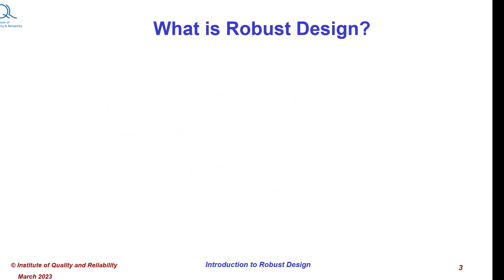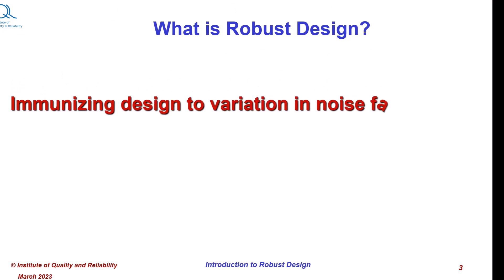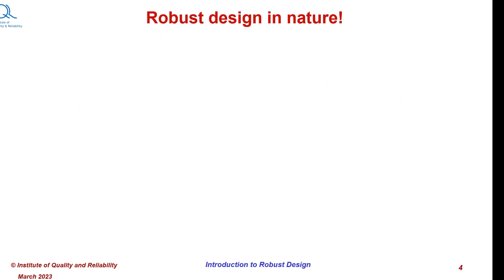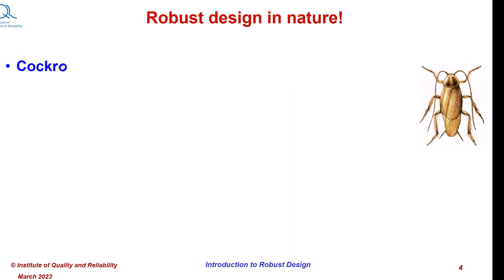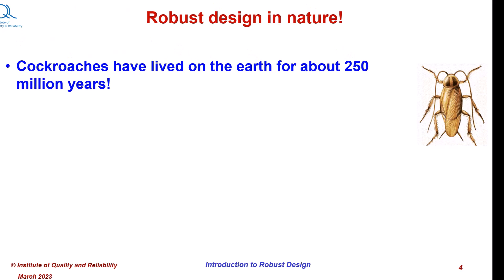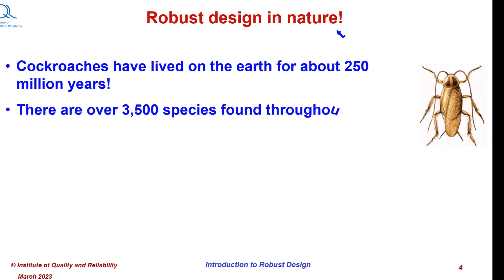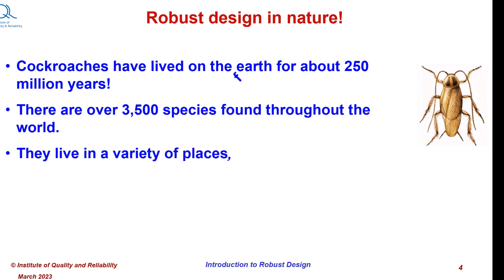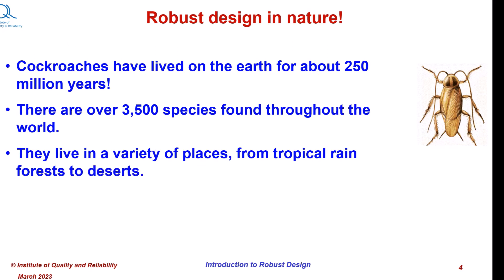So what is robust design in simple words? Robust design is immunizing the design to variation in noise factors. A classic example of robust design in nature is the cockroach. Cockroaches have lived on the earth for about 250 million years. There are over 3500 species found throughout the world. They live in a variety of places, from tropical rainforests to deserts.